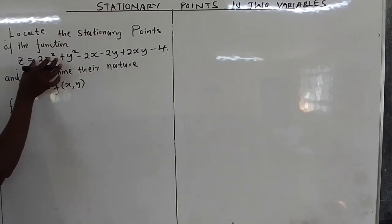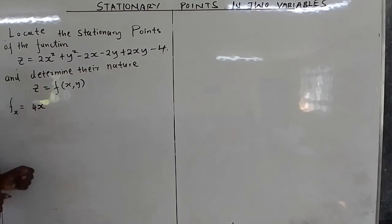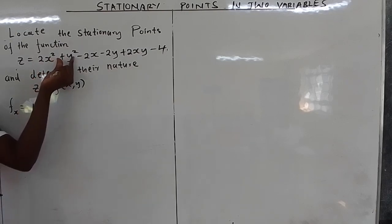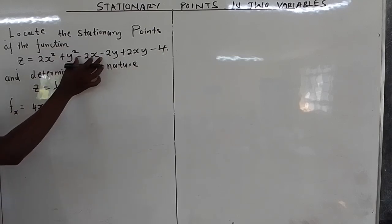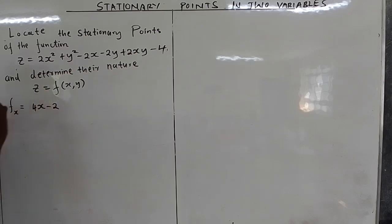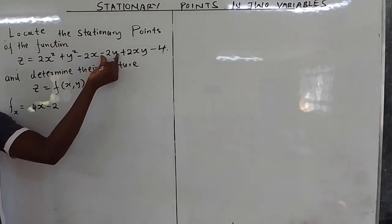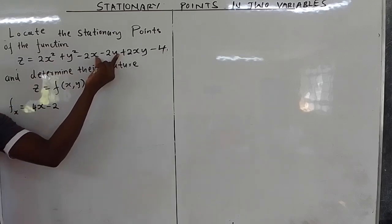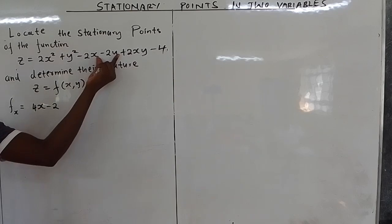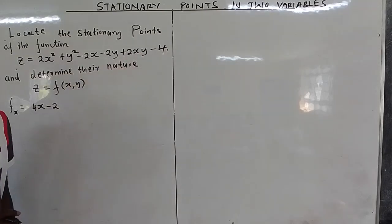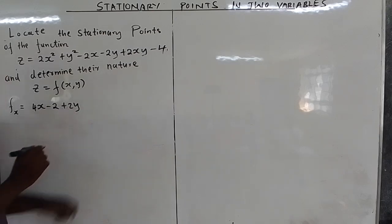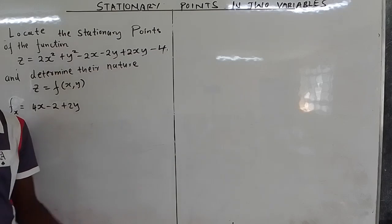Only x is a variable. If you differentiate 2x squared, you get 4x. Since y is a constant, the y squared term gives 0. If you differentiate minus 2x partially with respect to x, you get negative 2. Negative 2y is a constant, so you get 0. If you differentiate plus 2xy partially with respect to x, meaning 2y is a constant, you differentiate x and get 1, so you remain with plus 2y. If you differentiate negative 4 you get 0.